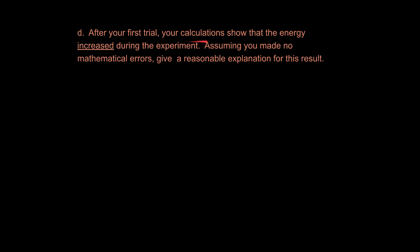So D says, after your first trial, your calculations show that the energy increased during the experiment. Assuming you made no mathematical errors, give a reasonable explanation for this result. Well, it's not reasonable to have an increased amount of energy in the system if there are no major outside forces acting on the system. So the question becomes, why do we have increased energy? And it must be an error. So a reasonable explanation for something like this would be a little push was given to the cart as it was released, something along those lines, because it's not going to magically gain energy from the universe. That doesn't happen. Energy is neither created nor destroyed.